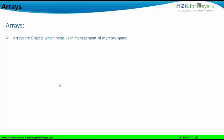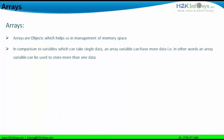In technical terms, arrays are nothing but objects. Arrays help us in management of memory space. If you look at a particular variable — say variable 'a' defined as an integer type — that variable can hold only one value, that is a single data. Whereas an array variable can hold more than one data. An array variable can be used to store more than one data. The number of data an array can hold depends on the element size of the array.